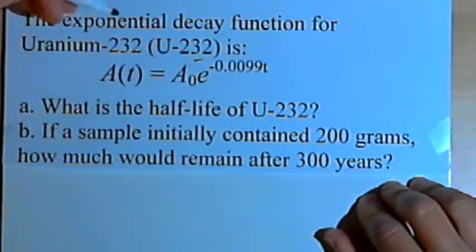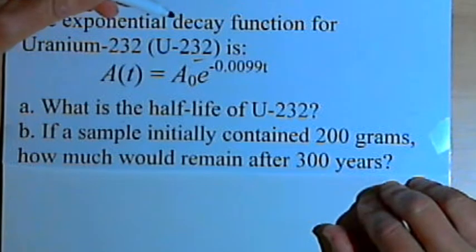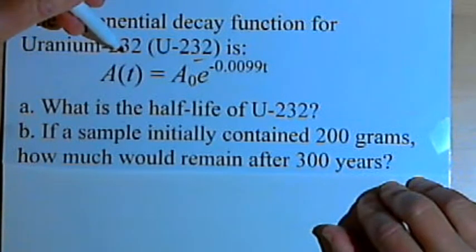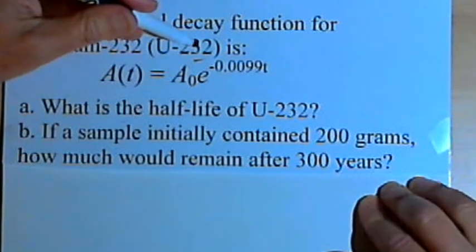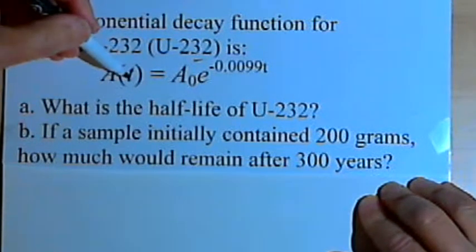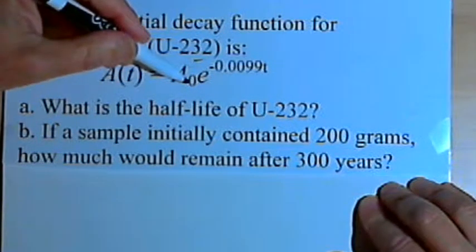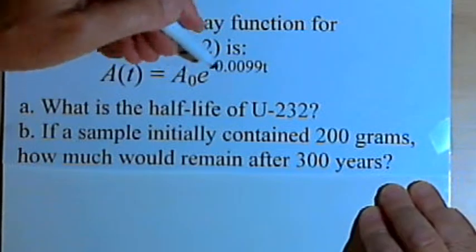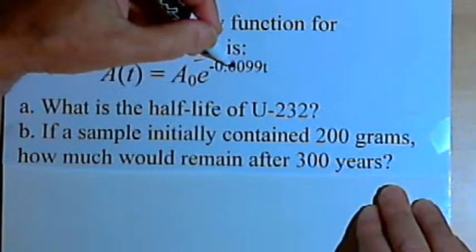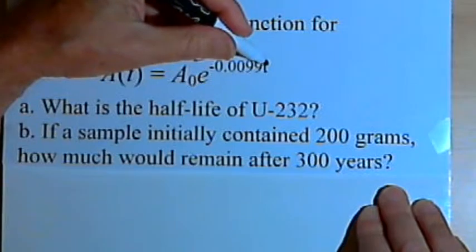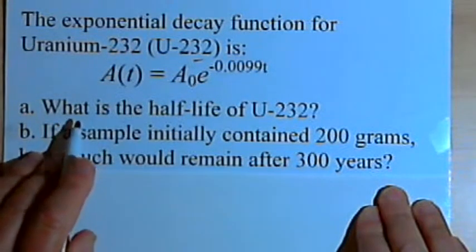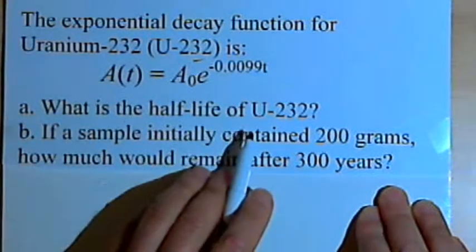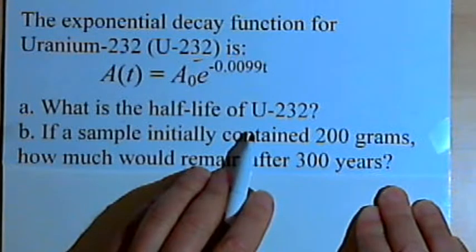This says the exponential decay function for uranium-232 or U-232 is A(t) equals A sub 0 times e raised to the negative point 0.0099t. And then the question it asks is what is the half-life of U-232?